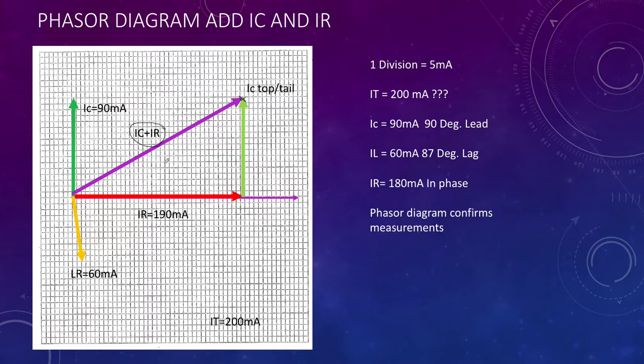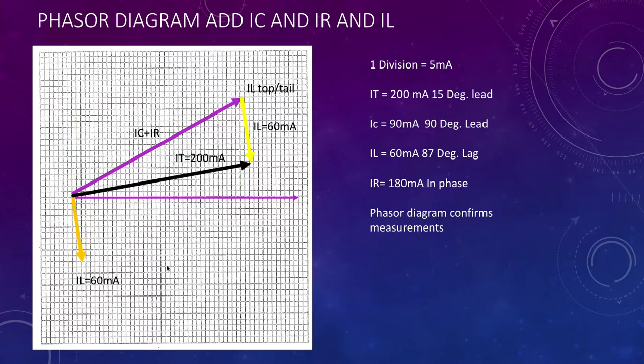We've now only got left on the phasor diagram our inductive current and the addition of the currents for IC and IR.